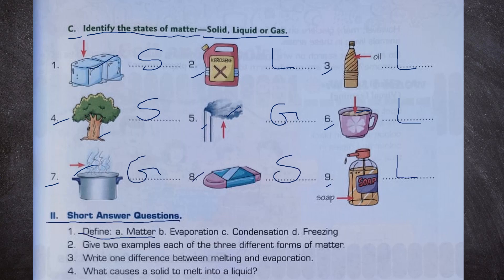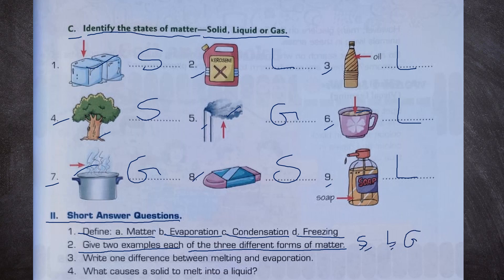Short answer questions. Define matter: everything which takes up space is known as matter. Evaporation: when a liquid changes into a gaseous state, this process is known as evaporation. Condensation: when gas changes into liquid, that is known as condensation. Freezing: when liquid changes into solid, this process is known as freezing. Number 2: Give two examples each of the three different forms of matter — solids like chair and dice; liquids like liquid soap and oil; gases like bug spray and perfume. Number 3: One difference between melting and evaporation — melting is when a solid changes into liquid; evaporation is when liquid changes into water vapor. What causes a solid to melt into a liquid? When we give energy in the form of heat, solid changes into a liquid.